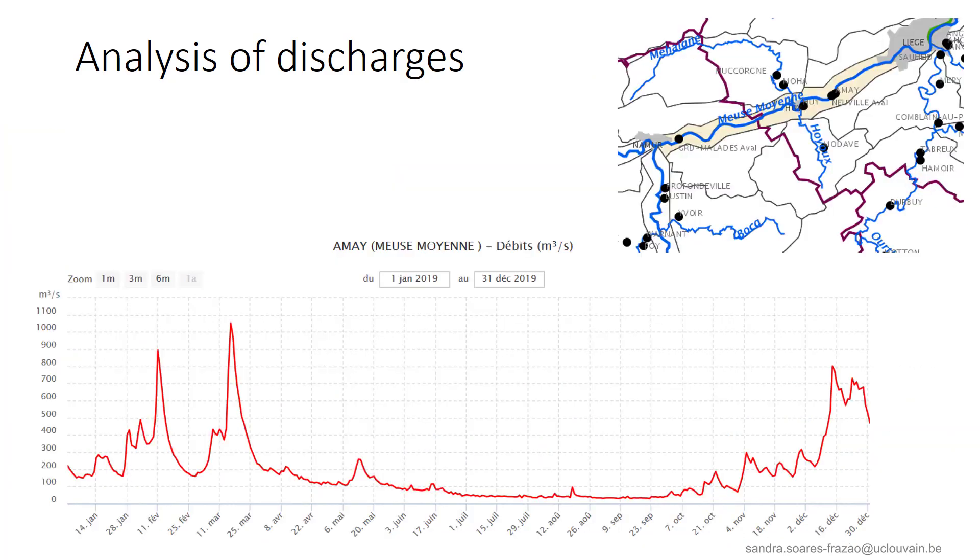The mean daily flow over the Meuse river at Hamais are shown here for the year 2019. We see that we have more important discharges in winter and autumn and low discharges often below 100 cubic meter per second in summer.